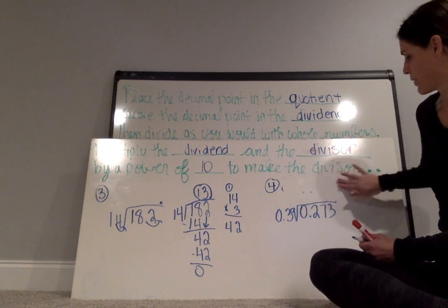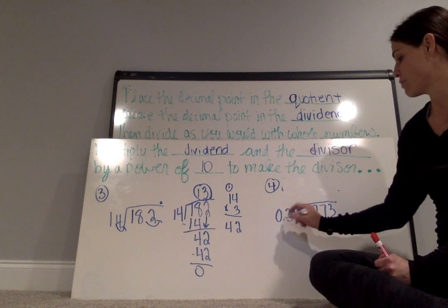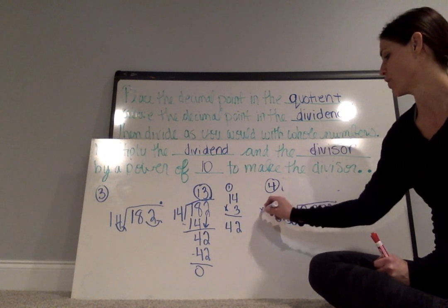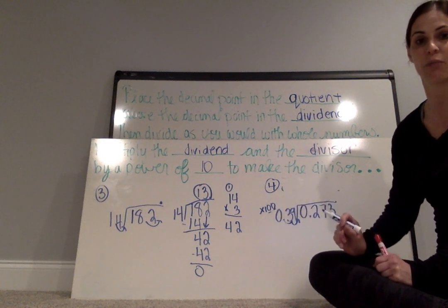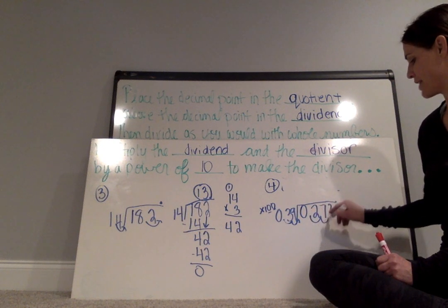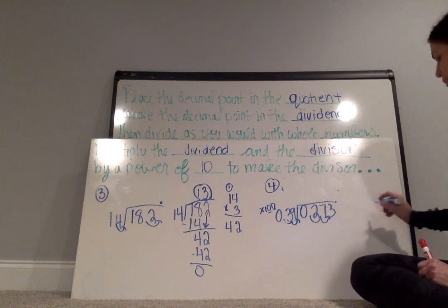So I can see in my divisor, I need to move the decimal point twice to the right. In other words, I'm multiplying by 100. Each zero moves the decimal point once to the right. So I also have to move the decimal point of my dividend also twice to the right.